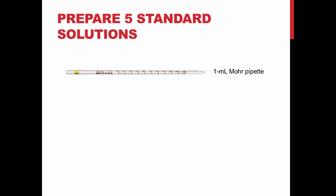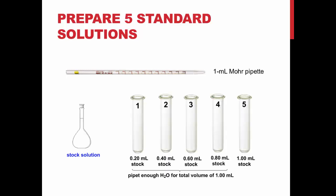From your stock solution, you will prepare 5 standard solutions using a 1 mL Mohr pipette. These pipettes can dispense different amounts of liquid depending on the amount you wish. You will pipette various amounts of the stock solution into 5 test tubes. The values you will need for each tube are written on this slide.